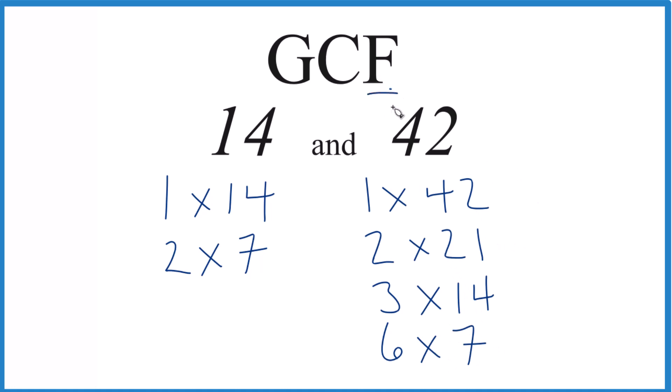So we have our factors. Now what we want to do is find the common factors between the two. So 1, that goes into 14. 1 goes into 42 evenly. 2, that works. 2 goes into 14. 2 goes into 42. And then looks like 7. 7, that's a common factor between them. And then 14 itself. That's the greatest common factor.